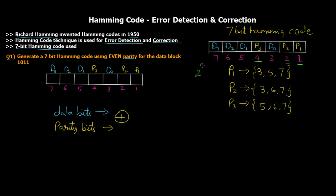Every 2^n location is a parity bit position — the rest are allocated to data bits in the proper order. For the data 1011, we write down 1, 0, 1, 1 at the data locations, keeping P3, P2, and P1 blank for now. We now need to calculate the individual parity values for these three parity bits.